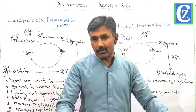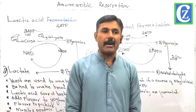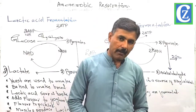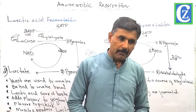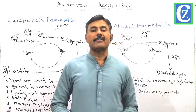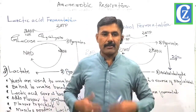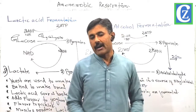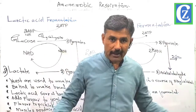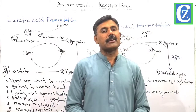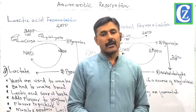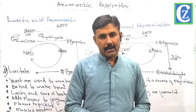Now we will start the actual breakdown of pyruvates into carbon dioxide and water by the process of the Krebs cycle. But the Krebs cycle needs the formation of another structure called Acetyl Coenzyme A. In the next video, I will convert pyruvates into Acetyl Coenzyme A, and then we will convert this Acetyl Coenzyme A into the Krebs cycle and study the other process of respiration.